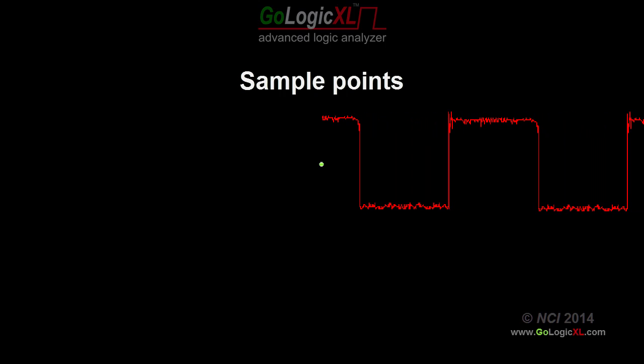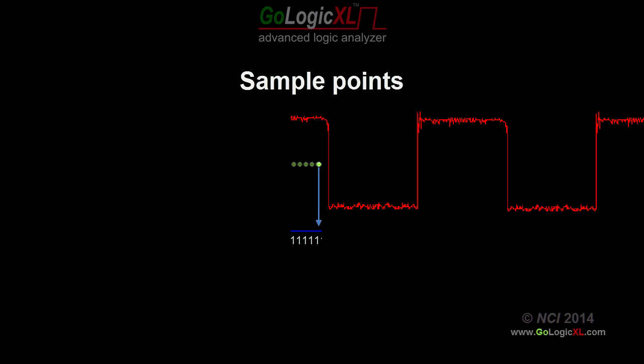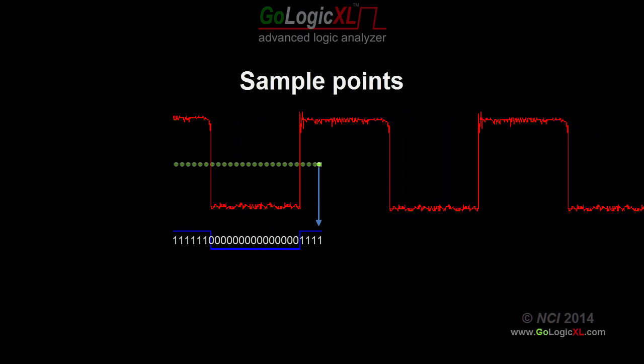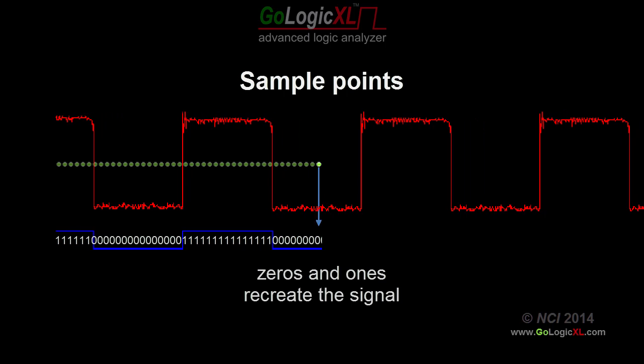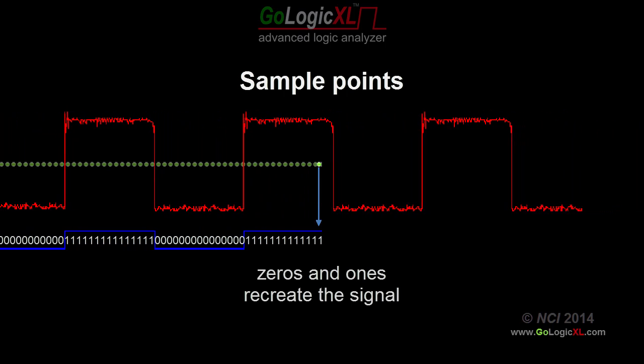As the input signals arrive, the logic analyzer compares the voltage at each sample point to the threshold level. Voltages above the threshold level are a 1 and voltages below the threshold level are a 0. The stream of 0s and 1s recreate the original signal.